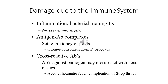Bacterial antigens — which are virulence factors — are molecularly similar to our own body's structural components. For example, Streptococcus antigens are similar to our joint components. The body produces antibodies against these bacterial antigens, but those antibodies also act on the body's own cells, causing lysis and provoking inflammation — this is termed autoimmunity. Acute rheumatic fever following Streptococcal sore throat is one well-known example.